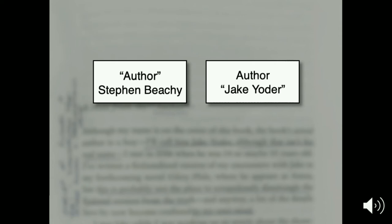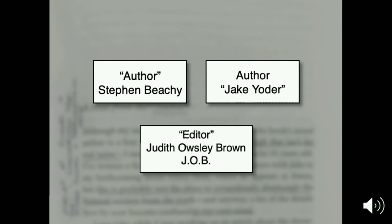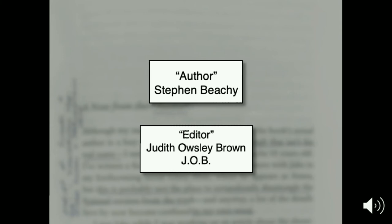Such a strange setup — the real author versus the fake author. But that upsetting relationship, designed to upset our faith in the author, gets even further complicated with a third figure: the editor, Judith Osley Brown, or J.O.B., as she appears in the footnotes. Now J.O.B. and Stephen Beachy will go on to have a kind of duel in the footnotes, a kind of argument. Footnotes are traditionally meant to make sense of confusing parts of the text. But what we find in Boneyard is that the footnotes further complicate the text by asking us to either question the sanity of the author or to question the validity of the footnotes. The footnotes become sort of self-subverting in the text.